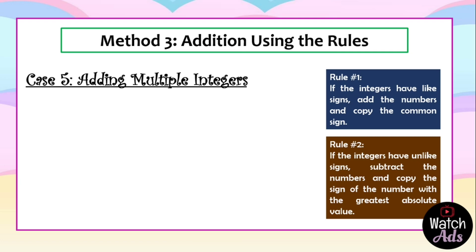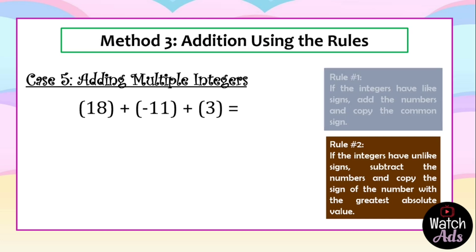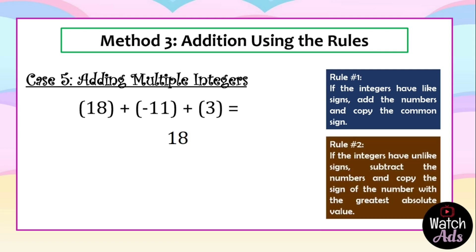Now we have another case: adding multiple integers. What if we are adding three integers with different signs? Here's an example: eighteen plus negative eleven plus three. To do this easily, we start with the like signs. Eighteen and three are both positive, so we add them first: eighteen plus three is twenty-one. Then we proceed with negative eleven, which is the only negative addend. For unlike signs we subtract: twenty-one minus eleven is ten. Twenty-one is greater, so the sign is positive. Answer: positive ten, or simply ten.